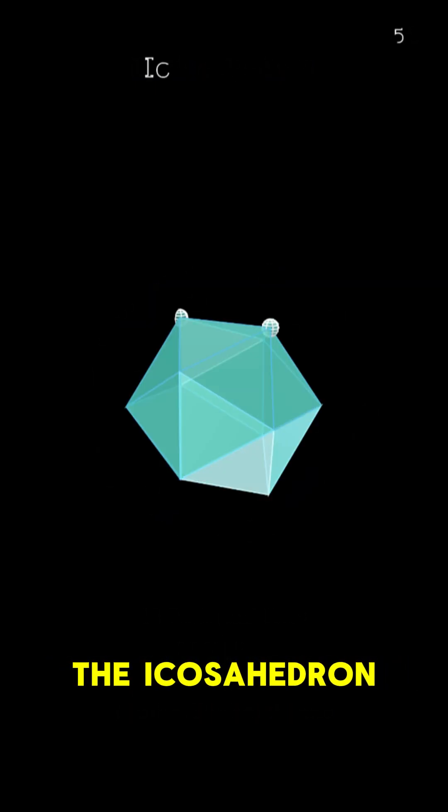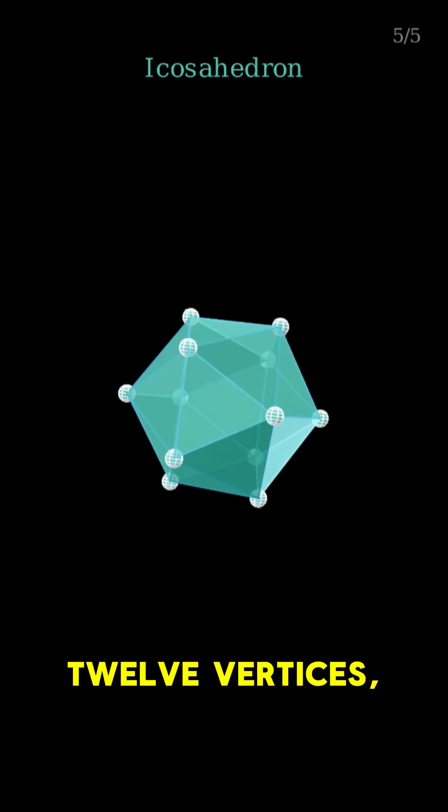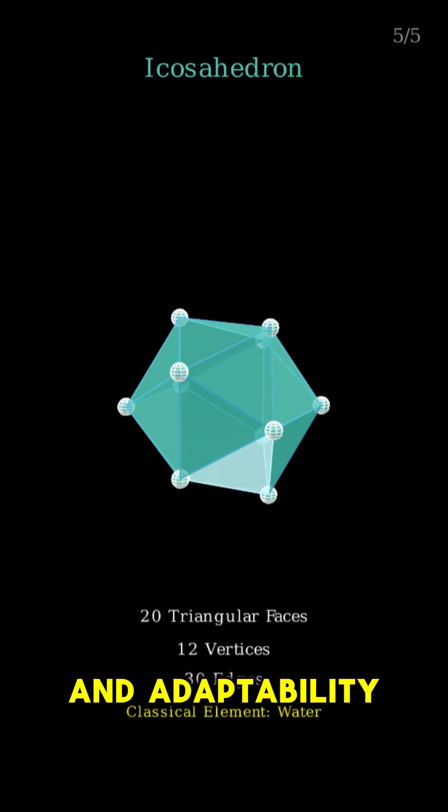Finally, the icosahedron. 20 equilateral triangular faces, 12 vertices, 30 edges, a symbol of water, fluidity, and adaptability.